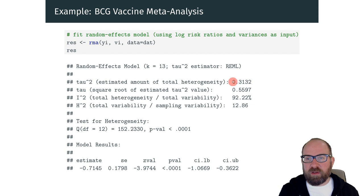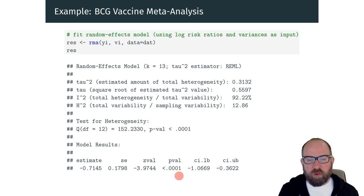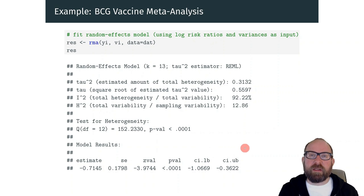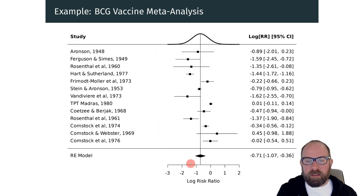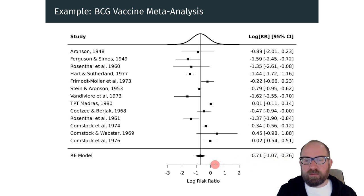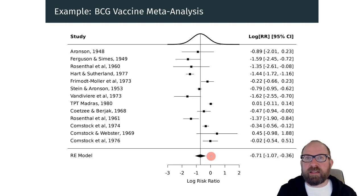Here are the results. We get our estimate of tau squared, our estimate of mu the average effect, the corresponding test whether this is significantly different from zero, and a corresponding confidence interval. You can see a fairly typical forest plot showing the results of the individual studies and, at the bottom, the results from the random effects model — namely the estimated average effect and the confidence interval. Since this excludes zero, we know this is a statistically significant effect, showing that the vaccine is indeed effective on average for reducing the risk against tuberculosis.